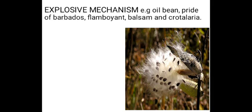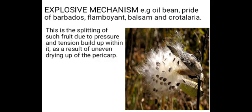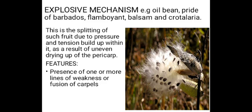Examples of fruits dispersed by explosive mechanism include oil bean, Balsam, Barbados flamboyant, and Crotalaria. Explosive mechanism involves the splitting of such fruits due to pressure and tension that build up within them as a result of uneven drying of the pericarp. Features of such fruits include: presence of one or more lines of weakness or fusion of carpels — called lines of suture. When the pericarp dries, it contracts, leading to the explosion.